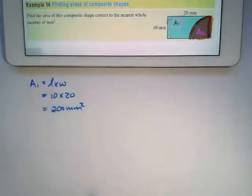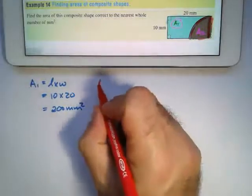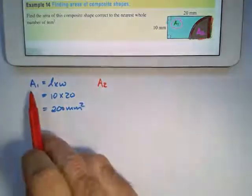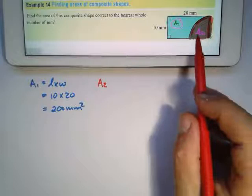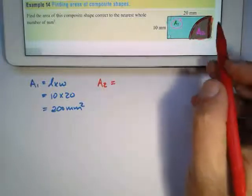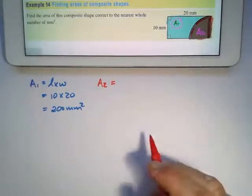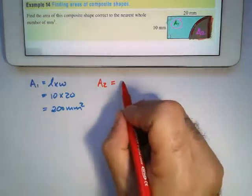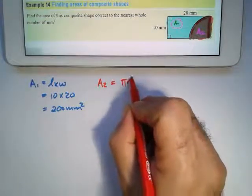My second area is going to be area two. Area two looks like a quarter of a circle. So what is a full circle? Well a full circle is π r squared.